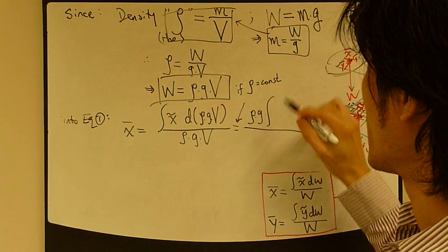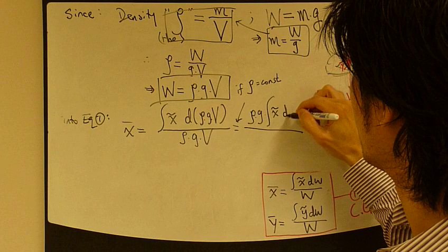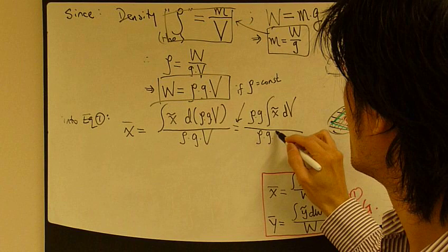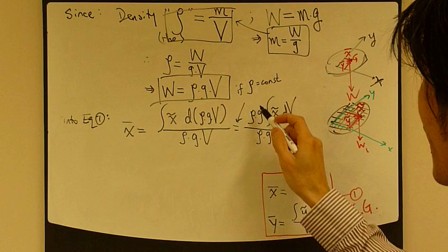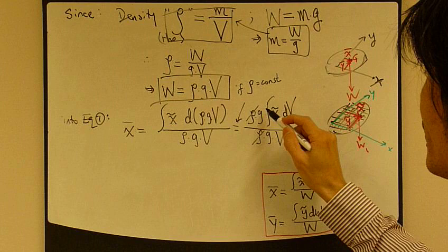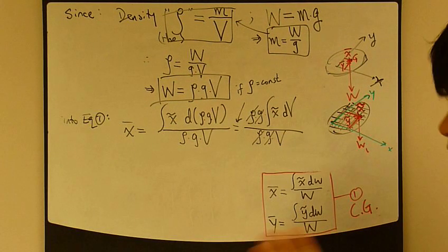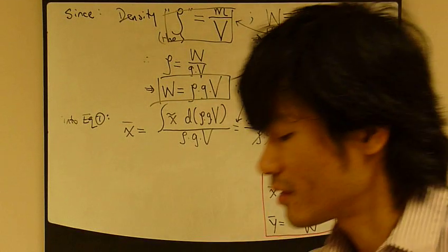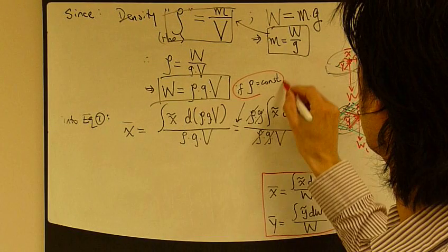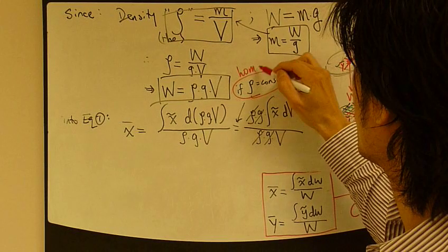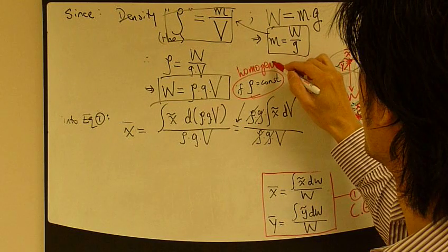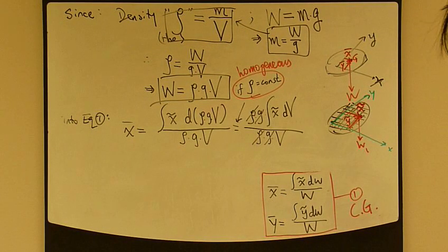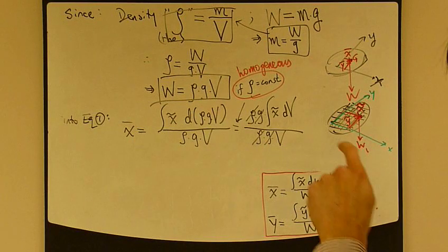What's left is integral of x tilde dv. And then we have rho g v. Look at that - rho and rho cancel out, g and g cancel out. That's the beauty. We can cancel out only if rho is constant - that is, if the rigid body is homogeneous, like one single material.